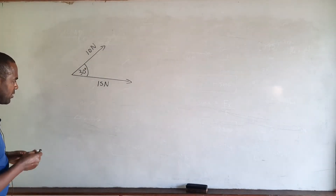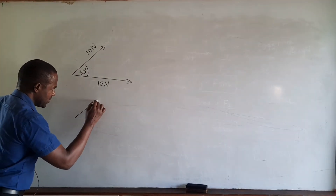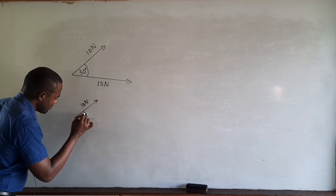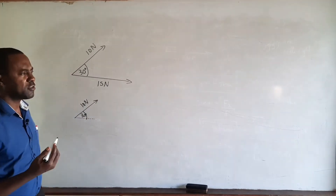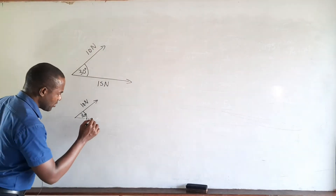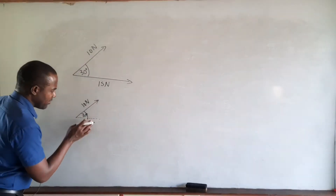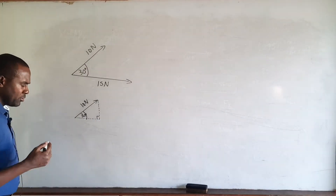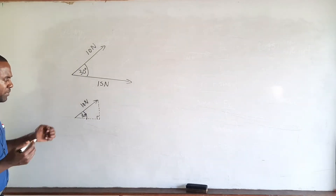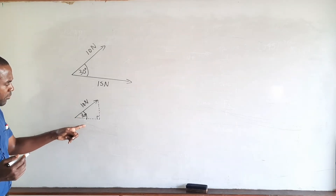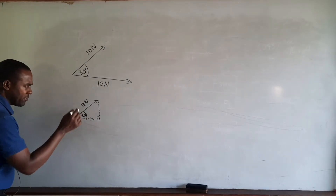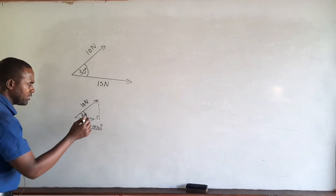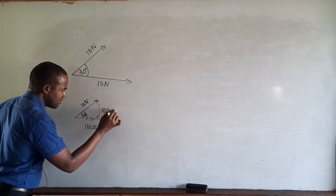Let's focus on the 10 Newton force. It is acting at an angle of 30 degrees to the horizontal. When resolving it into components, it will have a horizontal component and a vertical component, with a right angle between them. The component adjacent to the angle is in terms of cosine, so the horizontal component is 10 cos 30 degrees, and the vertical component is 10 sin 30 degrees.